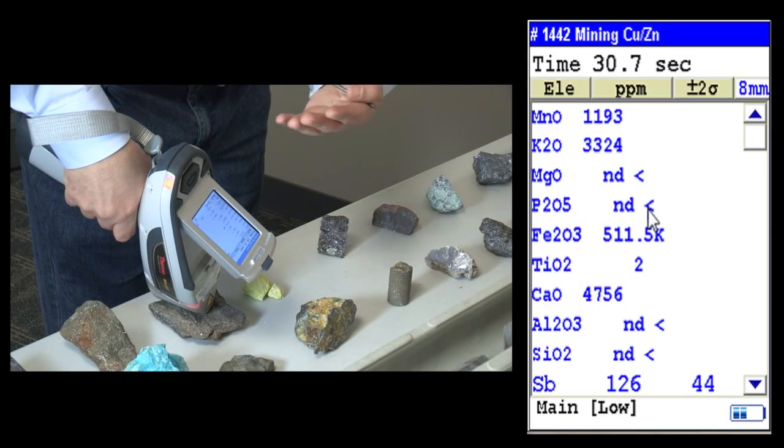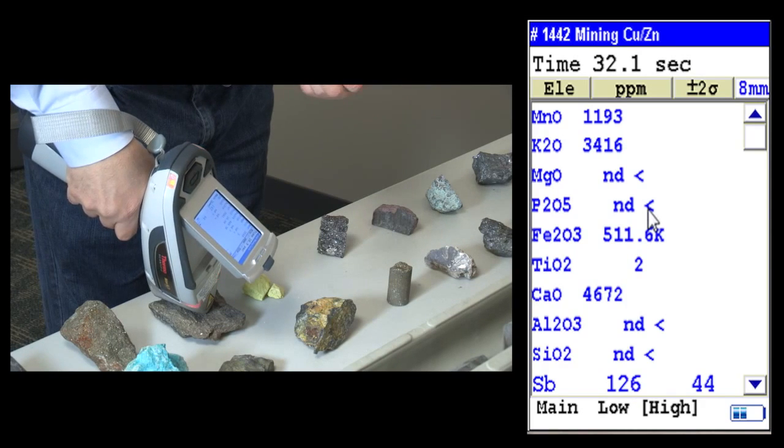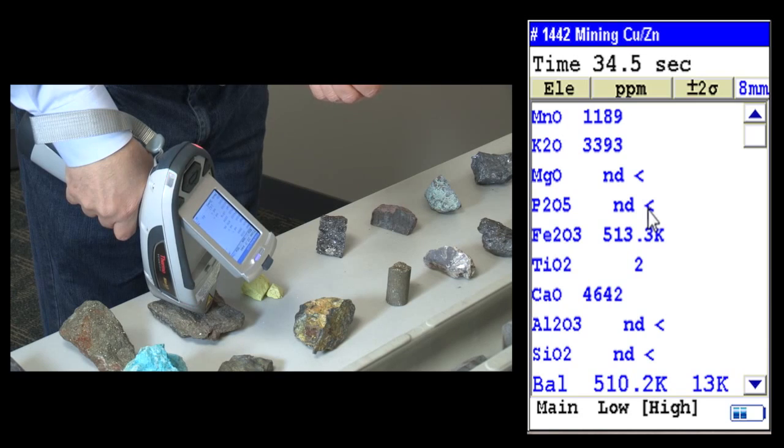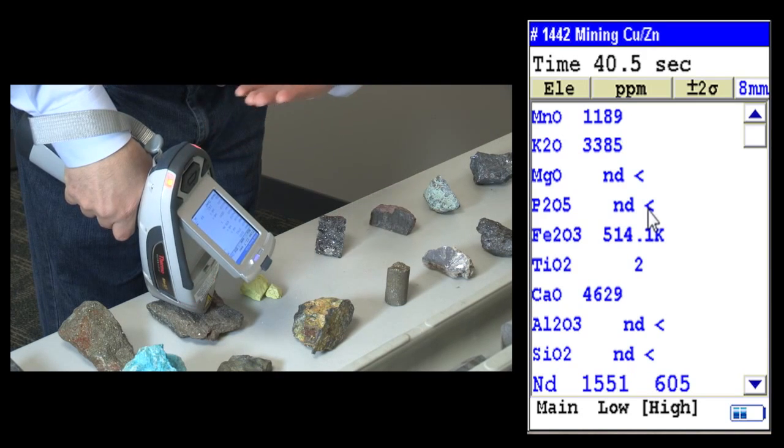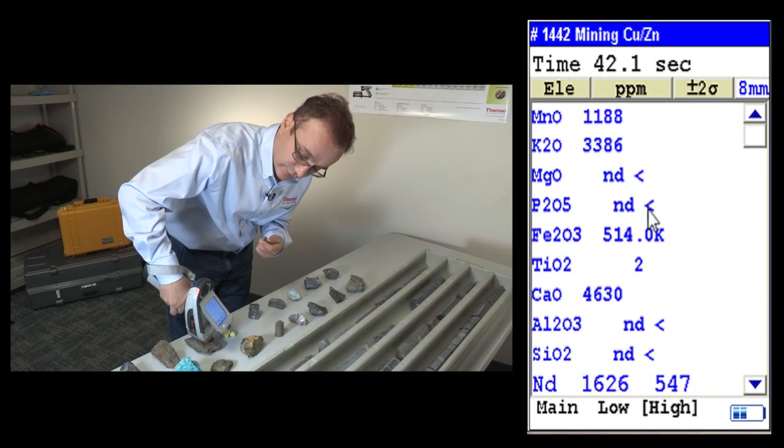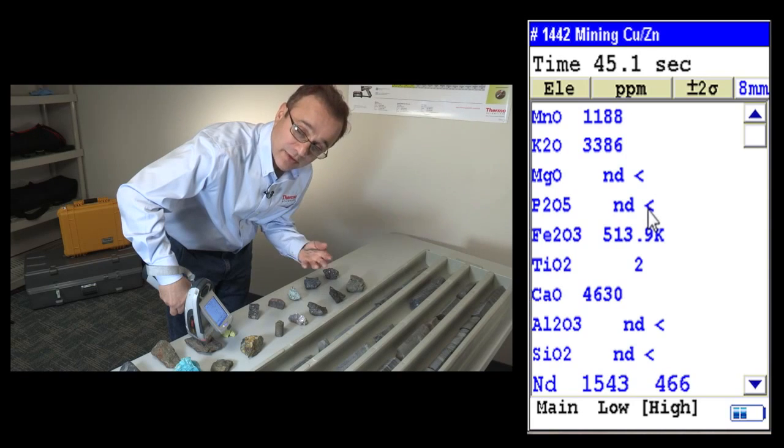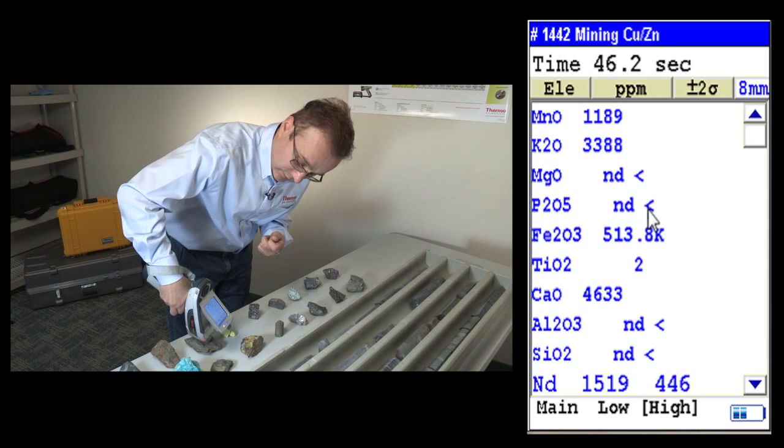You can choose to show your major elements as oxides. It has a feature called Sodo Elements where you can give the formula and the software will calculate your element based on the formula entered to the system.